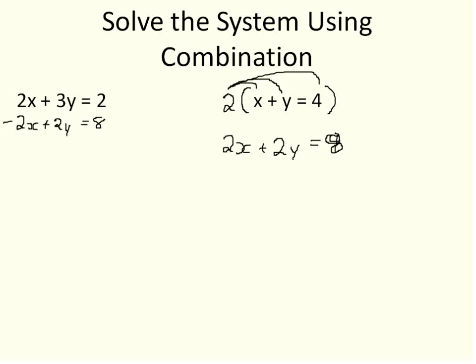2x plus 2y is equal to 8 underneath. And I know I need to subtract the second equation from the first if I'm going to eliminate my x values. So the first step is multiplying. This adds one more step to our combination method. But otherwise, it's the same exact method as regular linear combinations.